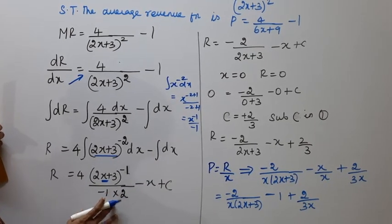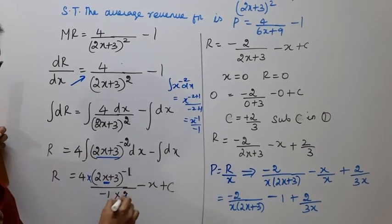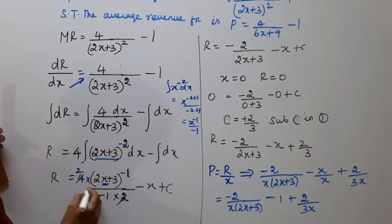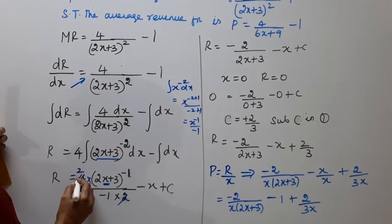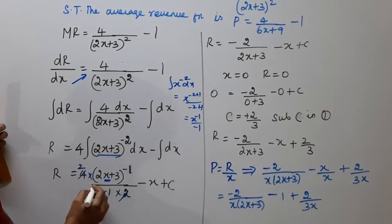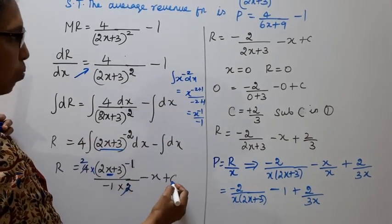So R equals 4 divided by 2, which is 2. With the negative sign, we get minus 2 by -1 divided by 2, giving us minus 2/(2x+3) minus x plus C.